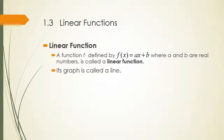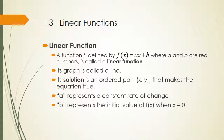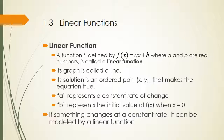The graph of a linear function is a line. The solution to the function is an ordered pair — an x and y value — that makes the equation true. A represents a constant rate of change, while b represents the initial value of the function when x is zero. If something changes at a constant rate, it can be modeled by a linear function.